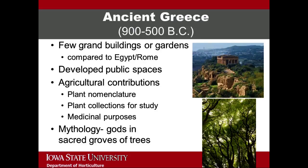The gardens of ancient Greece occurred between 900 and 500 BC. Just as with the Egyptian gardens, the climate and landform of Greece significantly impacted the gardens of that time. The mountainous terrain and little rain influenced garden layout as well as plant selection. The societal structure of the time resulted in few grand buildings or gardens compared to ancient Egypt and ancient Rome, but also created large public garden spaces for gatherings. The Greeks contributed advances in agriculture and technology, including an initial plant nomenclature system, plant collections for study, and an understanding of plants that could be used for medicinal purposes. Greek mythology was evidenced in the large sacred groves of trees where gods resided.